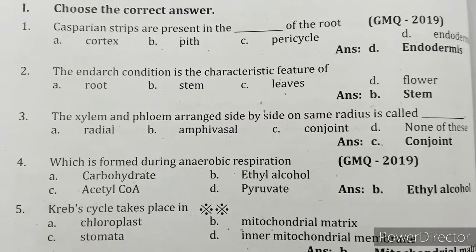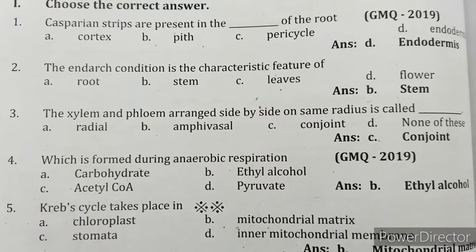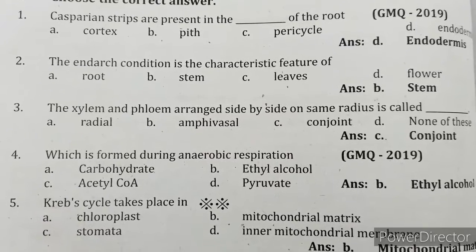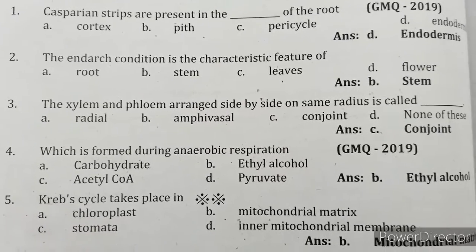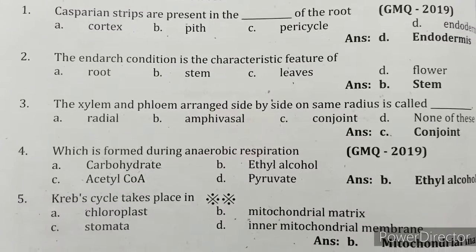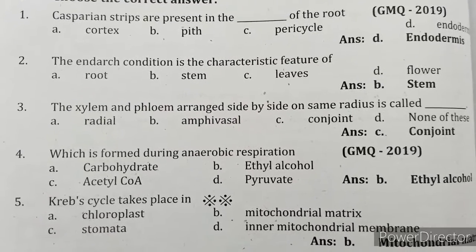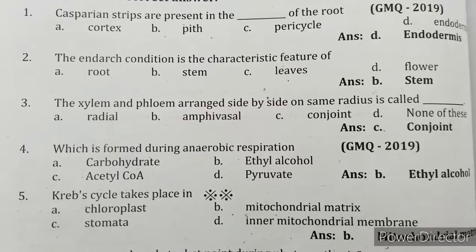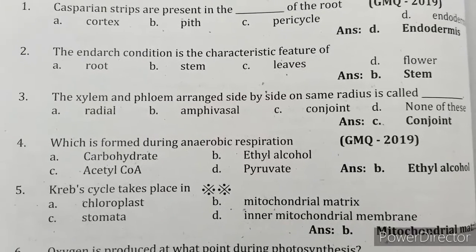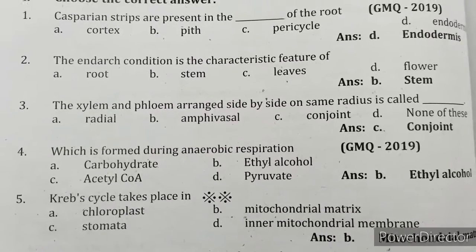Casparian strips are present in the endodermis of the root. The endodermis condition is the characteristic feature of the stem. Xylem and phloem arranged side by side on the same radius is called conjoint. Ethyl alcohol is formed during anaerobic respiration. The Krebs cycle takes place in the mitochondrial matrix.